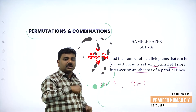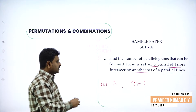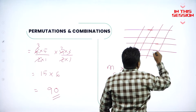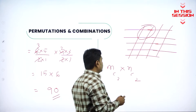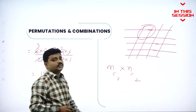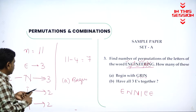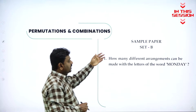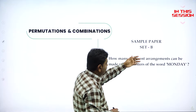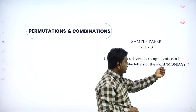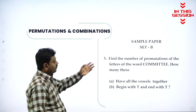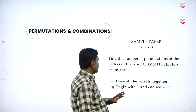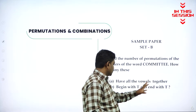In two different sets, I should combine two lines. So the number of parallelograms formula: two lines from each set that intersect will form a parallelogram. How many different arrangements can be made with the letters of the word Monday? Find the number of permutations of the letters of the word committee. How many of them have vowels together?